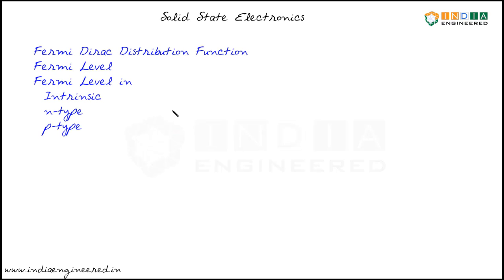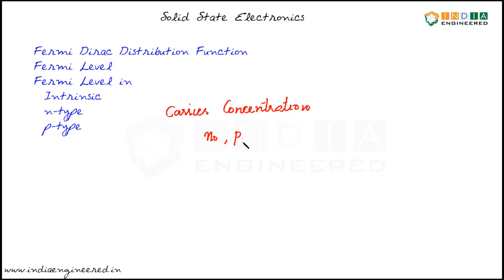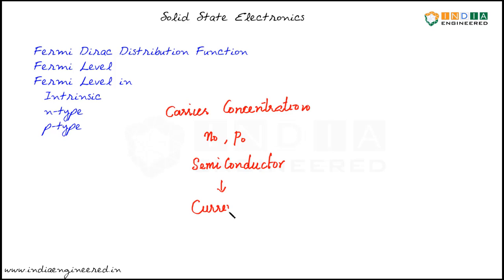In the coming videos, we will try to calculate the carrier concentration in semiconductor. Our aim is to calculate carrier concentration — that is, we want to calculate N0 as well as P0, that is equilibrium carrier concentration in semiconductor material. Once we have found out the carrier concentration, we can study about currents in semiconductor.